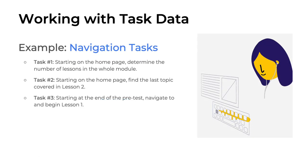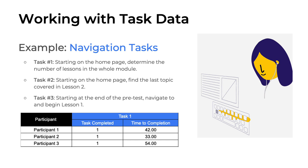What about task-related data? Here are some examples of usability tasks related to navigation. Task 1 asks participants to, starting on the home page, determine the number of lessons in the whole module. Task 2 asks participants to find the last topic covered in Lesson 2. And task 3 asks participants to navigate to and begin Lesson 1 while starting at the end of the pretest. So what kind of data might result from these kinds of usability tasks? Well, you might end up with completion and time data.